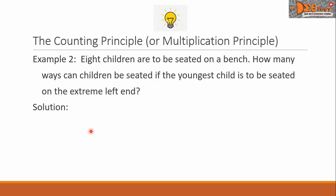For our solution, let us write here eight blanks, representing the arrangements of the children. This blank here is the extreme left, and this is reserved for the youngest child. So we put here one, because there is only one youngest among the children.